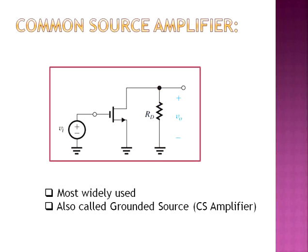The common source amplifier is one of the most widely used amplifiers. In an amplifier formed by cascading a number of stages, the bulk of the voltage gain is obtained by using one or more common source stages in cascade. Next, let us look into the characteristic parameters of the common source amplifiers.